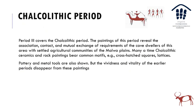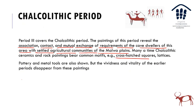In the Chalcolithic period, the paintings reveal association and contact — mutual exchange between cave dwellers and the settled agricultural communities of the Malwa plains. Chalcolithic ceramics and rock paintings bear common motifs such as cross, hatching, square, and lattice designs. Pottery and metal tools are also shown. However, the vividness and vitality of the earlier periods disappear from these paintings — as if the passion for painting that was so strong earlier began to fade.